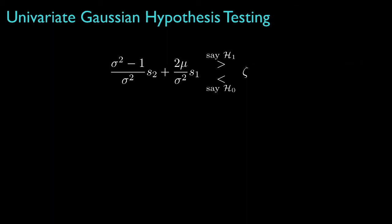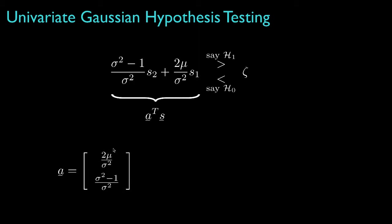For purposes of analyzing the receiver operating characteristic, we could compress all the right-hand side terms into a single threshold, and represent the left-hand side as a linear combination of the two decision statistics, where the vector a depends on the parameters mu and sigma, and the vector s contains the two decision statistics. Because the combined decision statistic is difficult to analyze analytically, we could use the Monte Carlo method to evaluate the receiver operating characteristic.